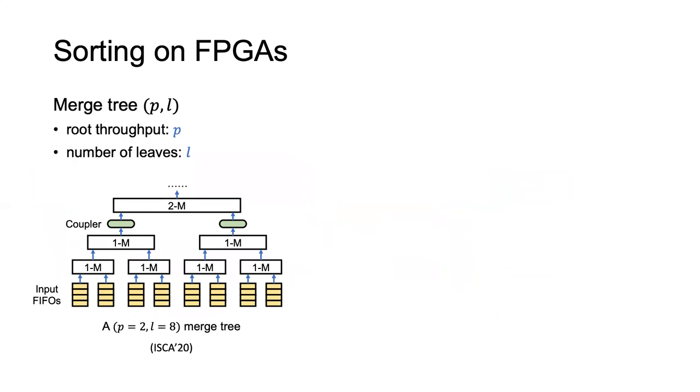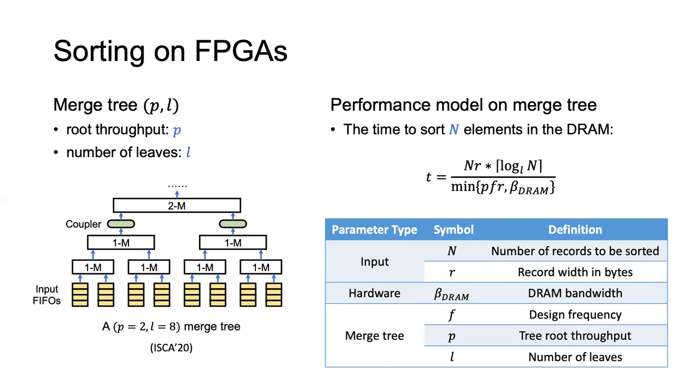With these parallel mergers we can build a complete binary tree which we call the merge tree. The merge tree can be uniquely defined by its root throughput p and the number of leaves L. For example, in the left figure the tree root outputs two elements per cycle and it has eight leaves. So we define the merge tree as p equals 2 and L equals 8. Given a merge tree to sort n elements in DRAM, we can easily get its performance model. It takes log base L of n number of passes to get all elements sorted. On the other hand, the effective throughput is the minimum of the tree throughput, which is p times the design frequency times the record width, or the available DRAM bandwidth.